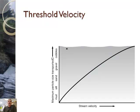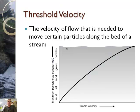That leads us to an interesting concept and that is called the threshold velocity. The threshold velocity is the velocity of flow that is needed to move certain particles along the bed of a stream. As you can kind of see, the higher the stream velocity, so this would be fast right here, very fast moving stream. And down here you would have a slow moving stream.